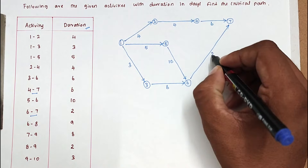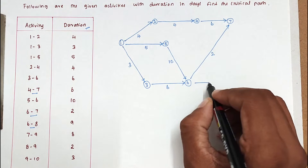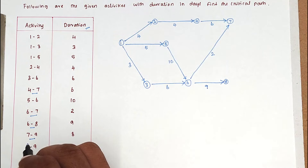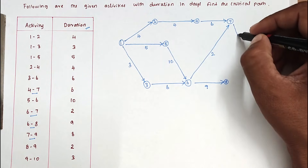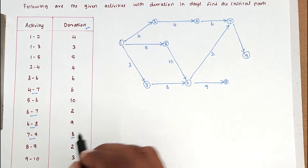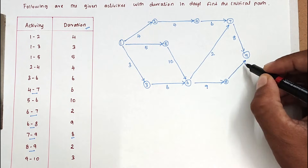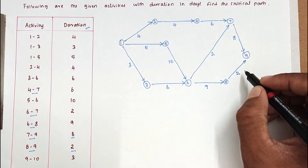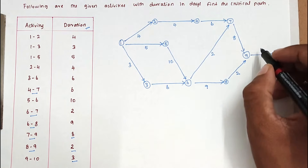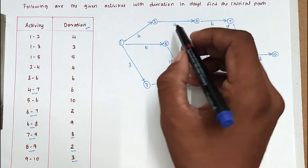Activity 6-8 has duration 9. Activity 7-9 has duration 8. Activity 8-9 has duration 2. Finally, activity 9-10 has duration 3. The activity labels and durations are noted under each arrow on the network diagram.